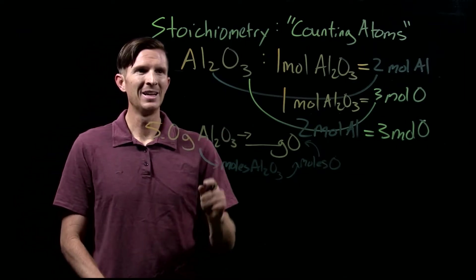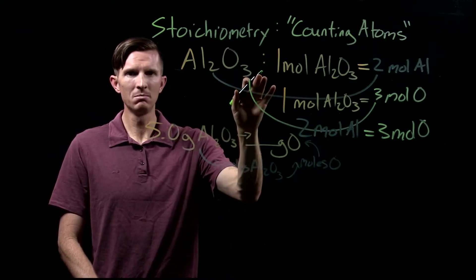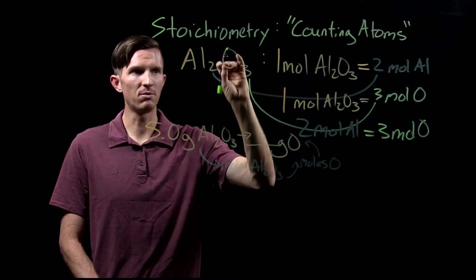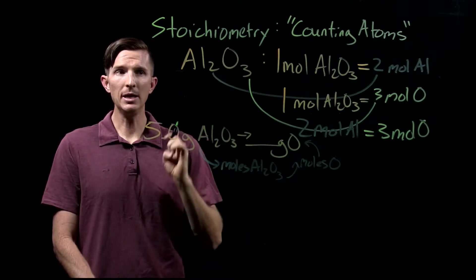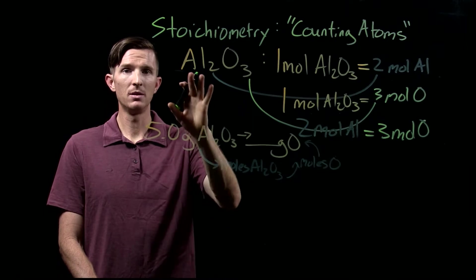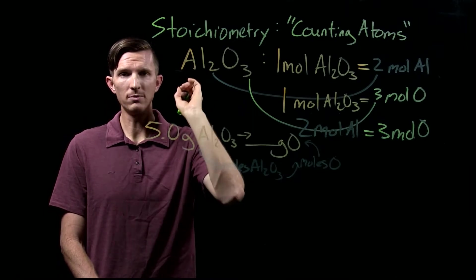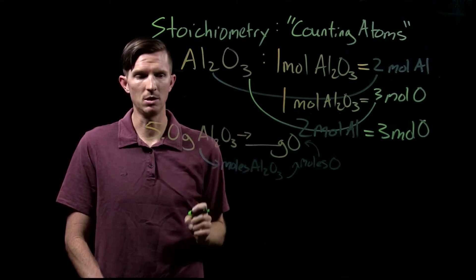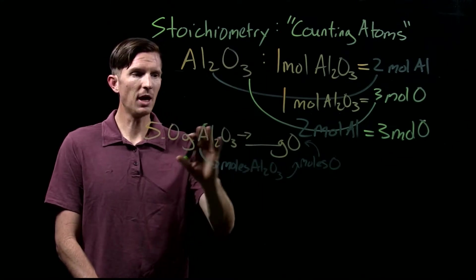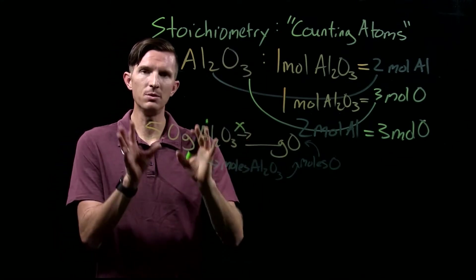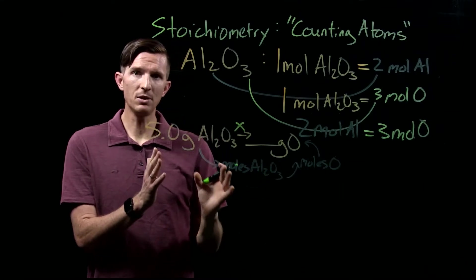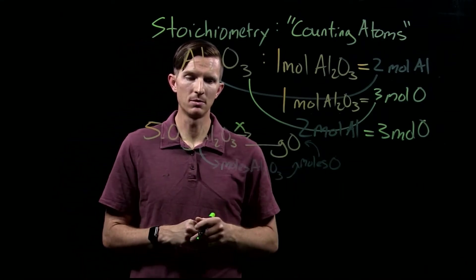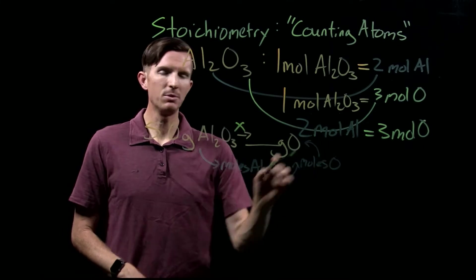Why take this route through moles rather than going directly from mass to mass? Because the subscripts two and three do not mean two grams of aluminum and three grams of oxygen — they mean two moles of aluminum and three moles of oxygen, or two atoms to three atoms. There's no direct mass-to-mass conversion; we have to go through counting the numbers of each, and each arrow in our path represents a conversion factor.